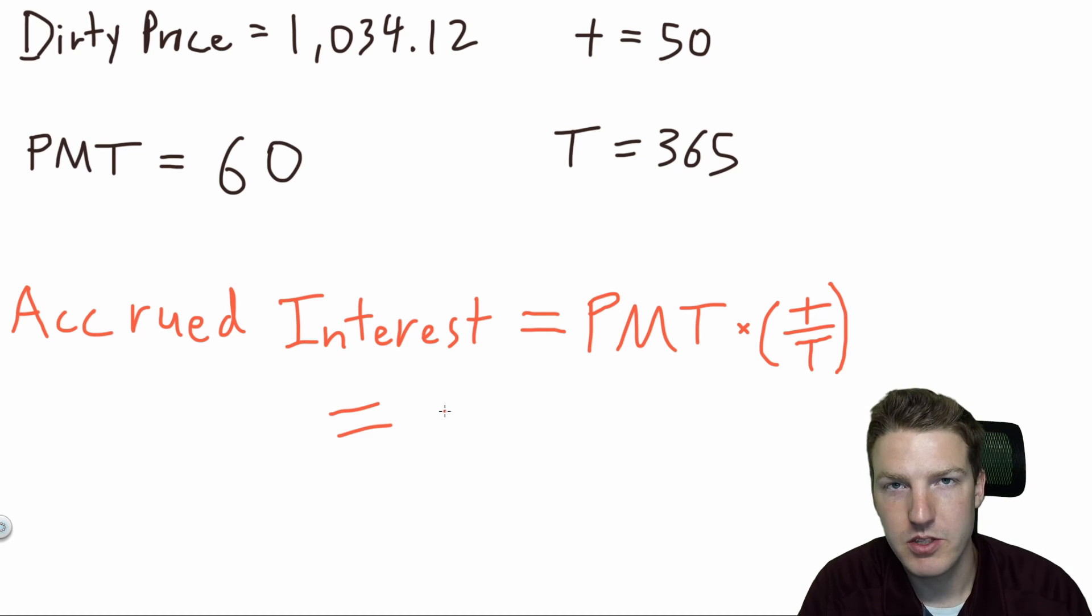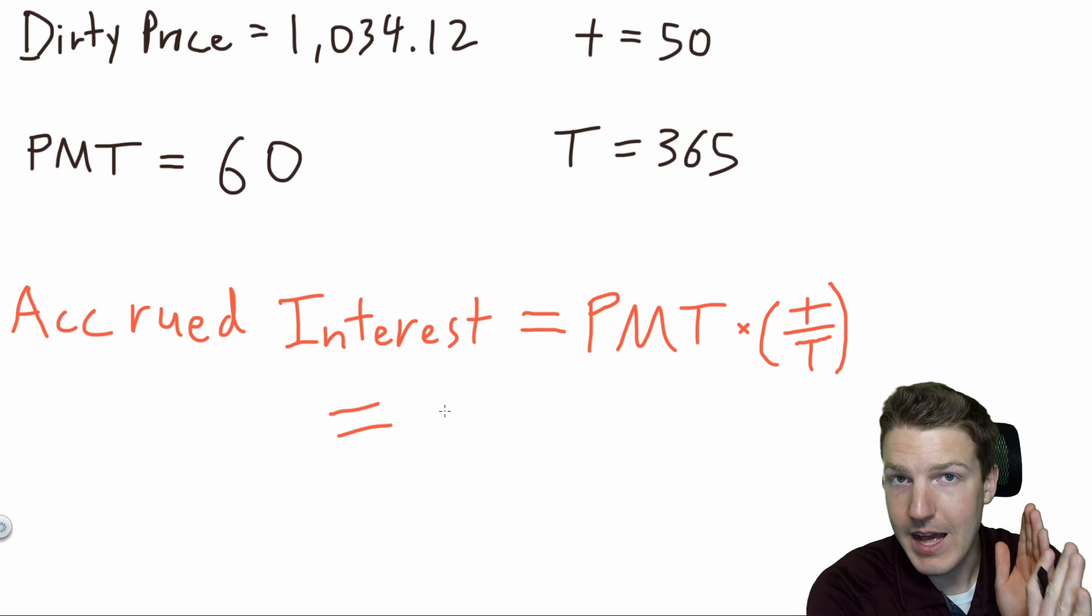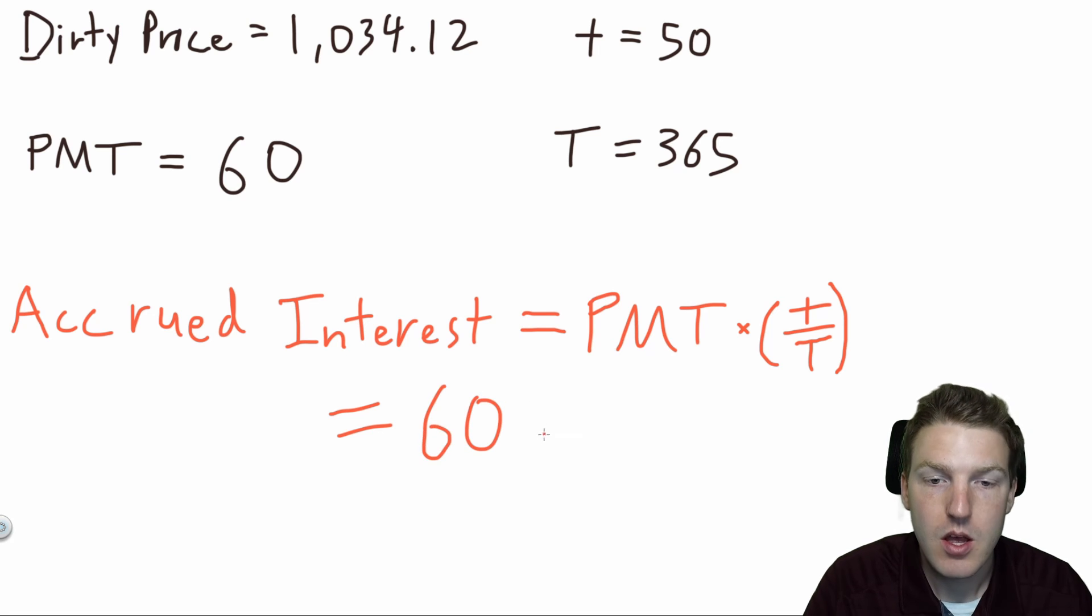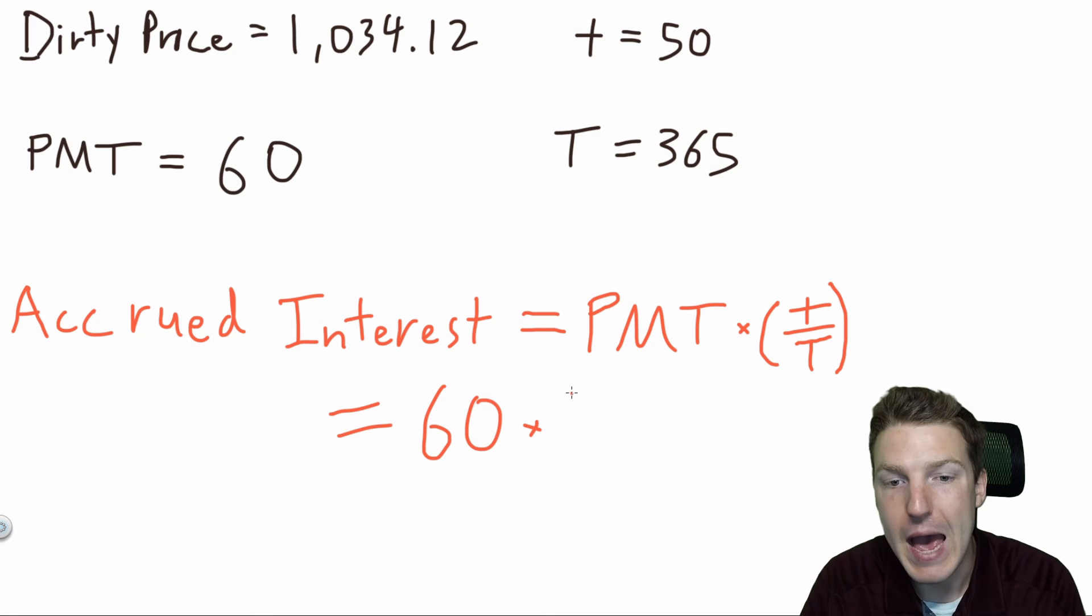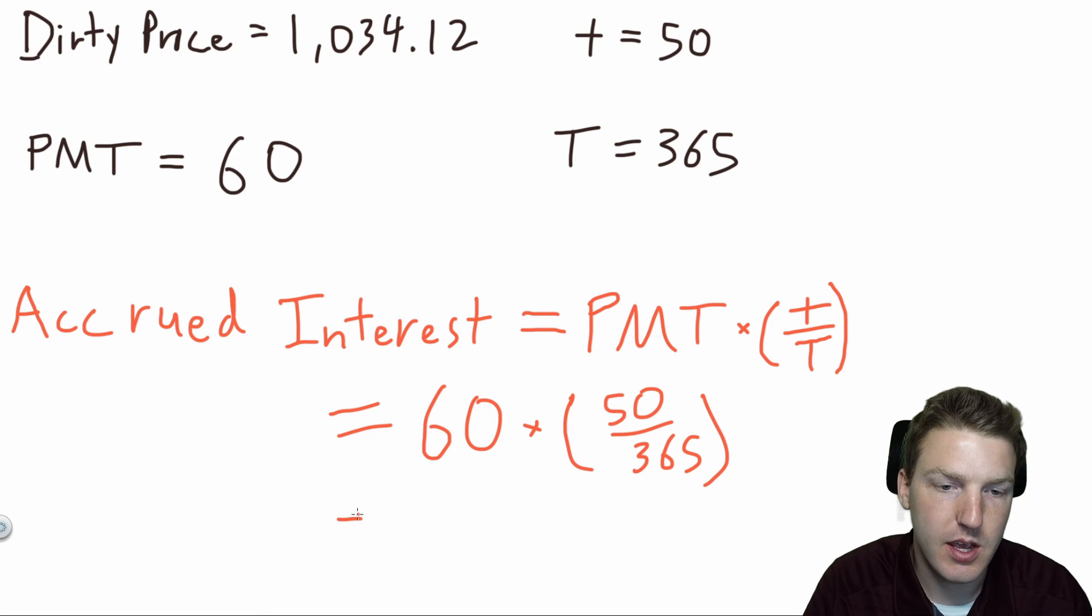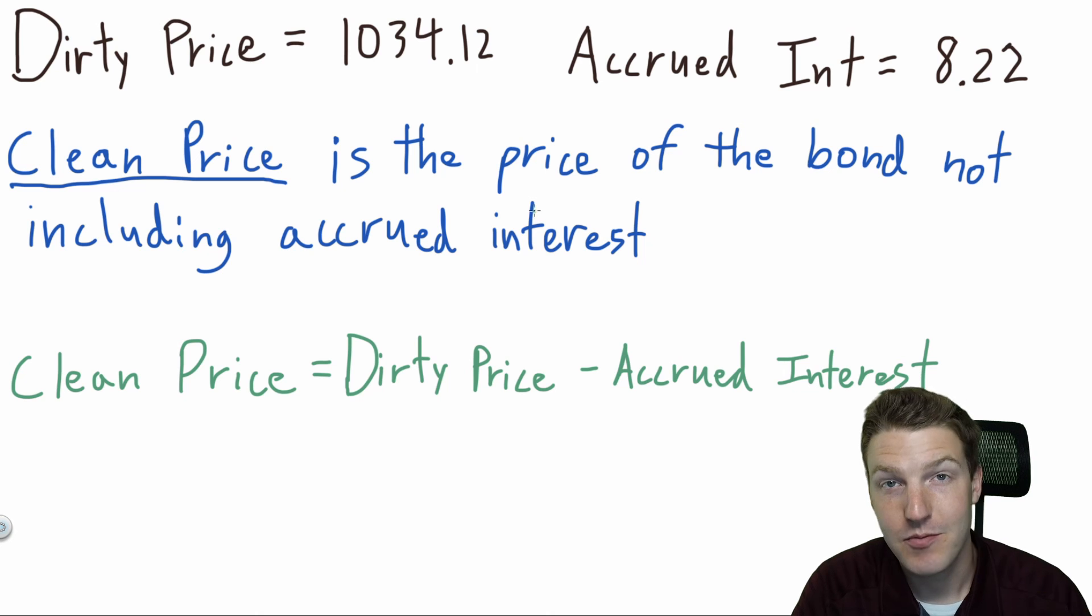In order to get from the dirty price of the bond to the clean price of the bond, we have to calculate accrued interest. Accrued interest is just the interest that's accrued since the last coupon date up until the point of the sale of the bond. In this example, we've been using 50 days. So accrued interest will be equal to the annual payment, $60, times the percent of the year that has passed, which is just 50 days out of 365 days have passed. So we can say that $8.22 of interest has accrued so far.